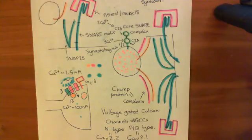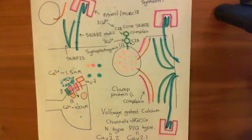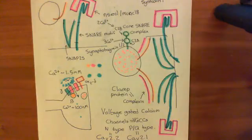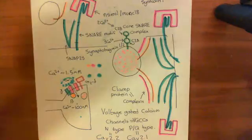Now we're also going to look at another function by which synaptotagmin promotes fusion. Synaptotagmin doesn't seem to just have one mechanism by which it causes fusion — there seem to be multiple mechanisms by which it acts to promote fusion of the synaptic vesicle with the plasma membrane. So we're now going to look at its interaction with lipids in the phospholipid bilayer.